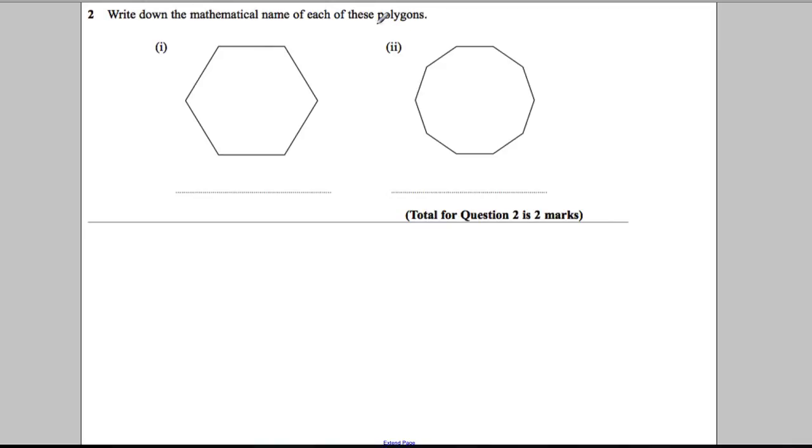Write down the mathematical name of each of these polygons. Okay, so a polygon is a shape with many straight sides.